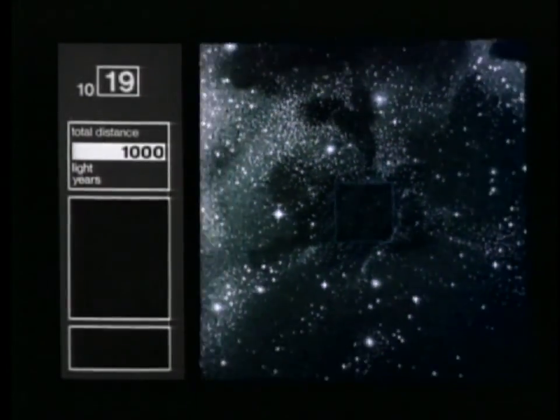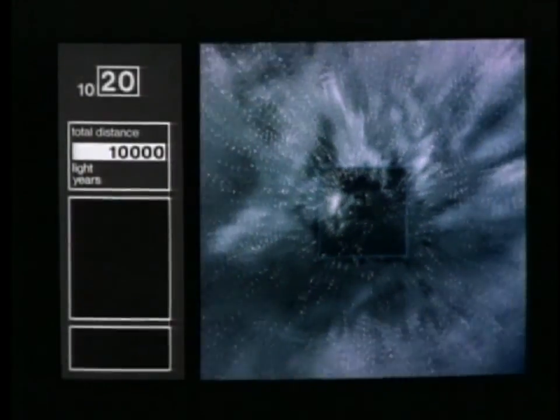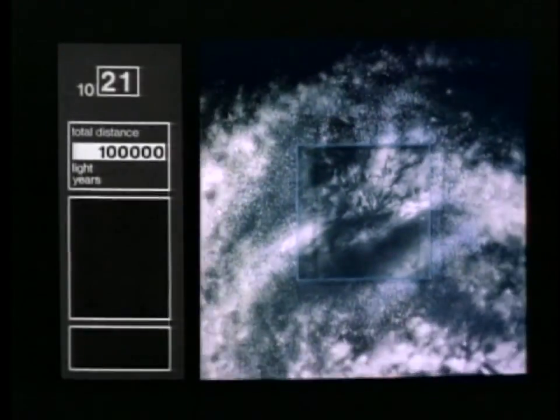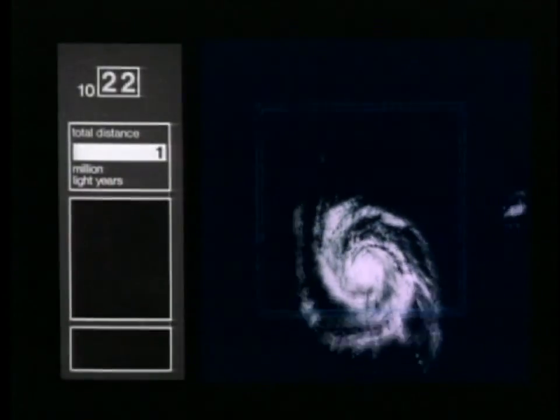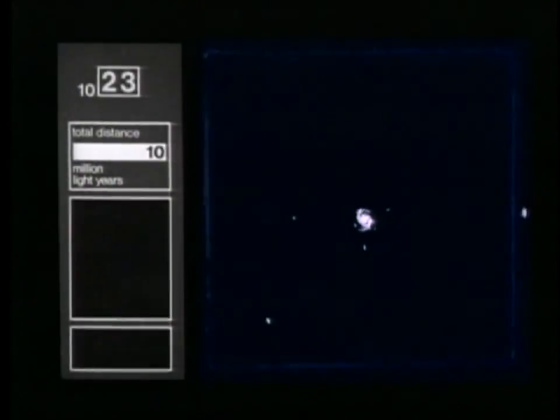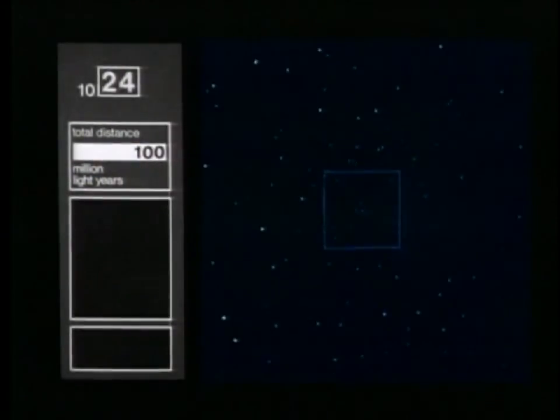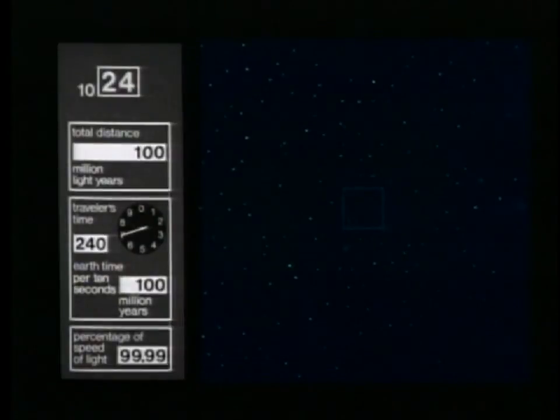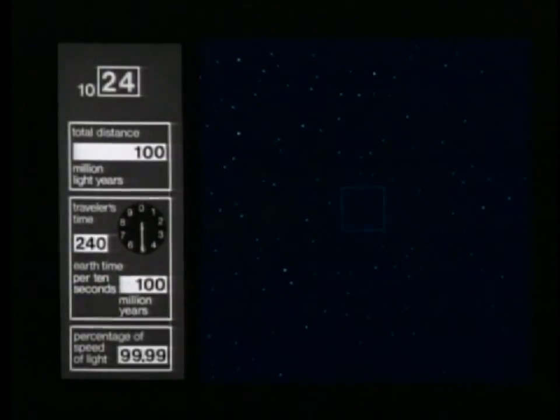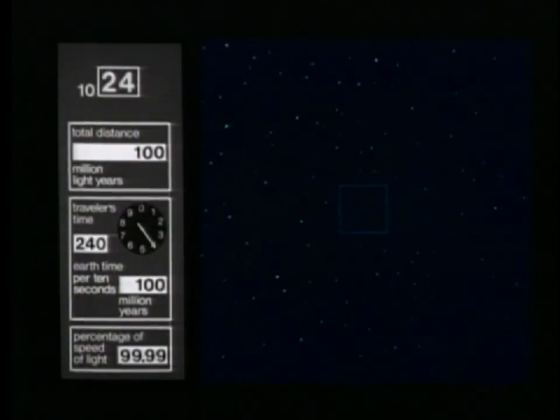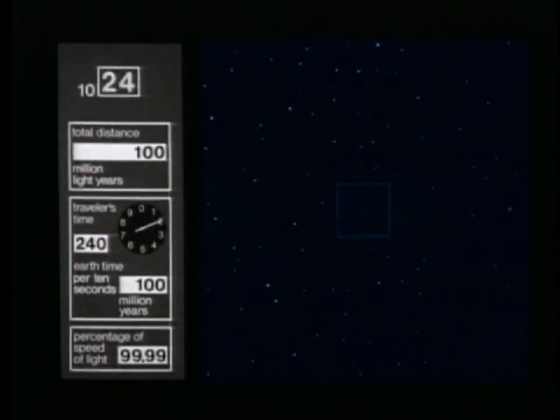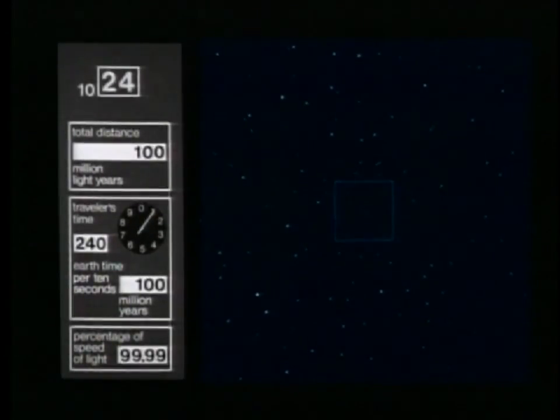In the film The Powers of Ten, it was a model. It was a model of a thin line through the universe, if you will, and it had two scales. It had a regular linear time scale, and it had a logarithmic scale in terms of distances. But this was a model. It was a model that helped in many ways.